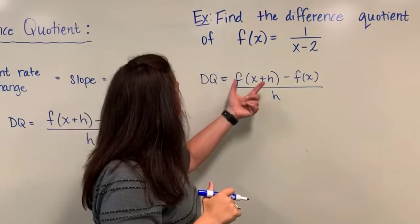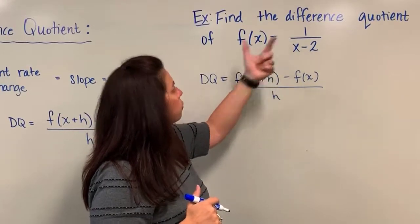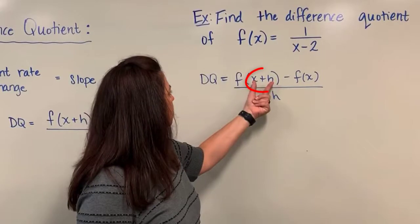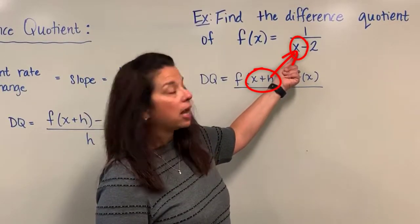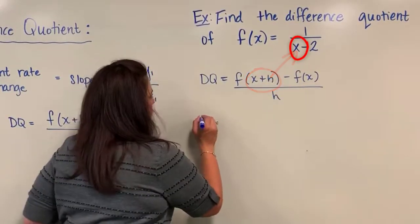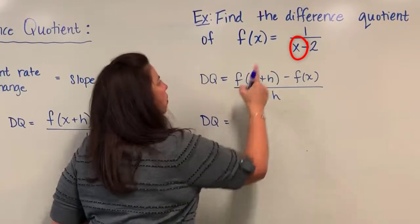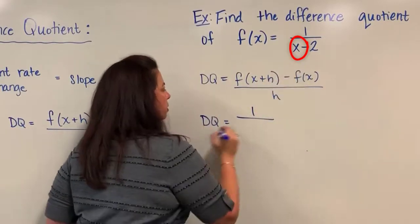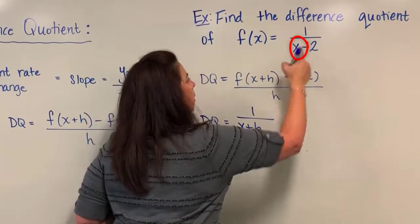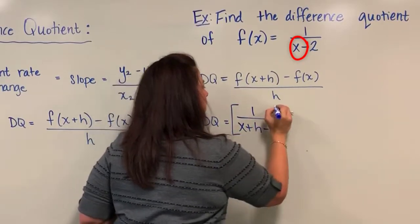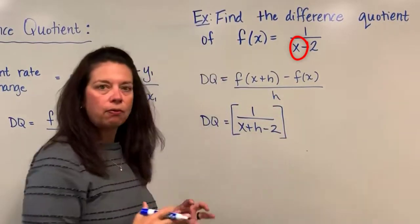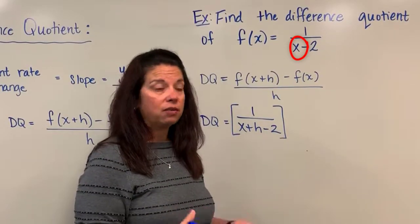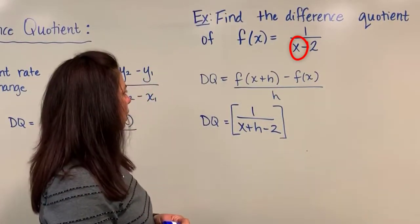Again, a reminder: we've got f of x plus h that we need to use my f of x to find. So we're going to substitute in the quantity x plus h into the function everywhere I see an x. When I do this, I end up with 1 divided by x plus h minus 2. I'm going to put this in brackets to indicate that that fraction now replaces my original fraction, because we are actually trying to evaluate that function for the quantity x plus h.